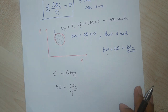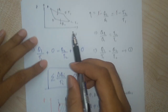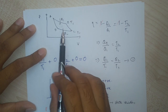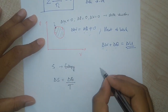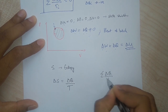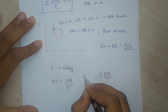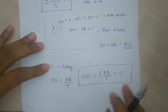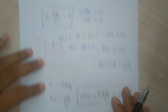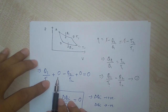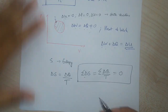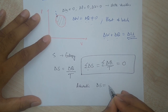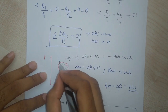Entropy is a purely mathematical concept. For a Carnot engine, if we track all the changes in the ratio of heat by temperature — the sum of the changes in entropy — this happens to be zero. For adiabatic processes, since there is no heat given into the system, the change in entropy ΔS is equal to zero.